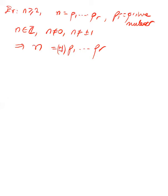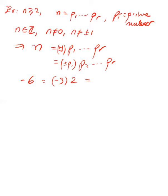So every element can be written as a product of irreducible elements in an essentially unique way. For example, minus 6 can be written as minus 3 times 2, or 3 times minus 2. Orders are not important, and 2 and minus 2 are associated to each other, as are 3 and minus 3. We will prove this more general statement for any UFD.